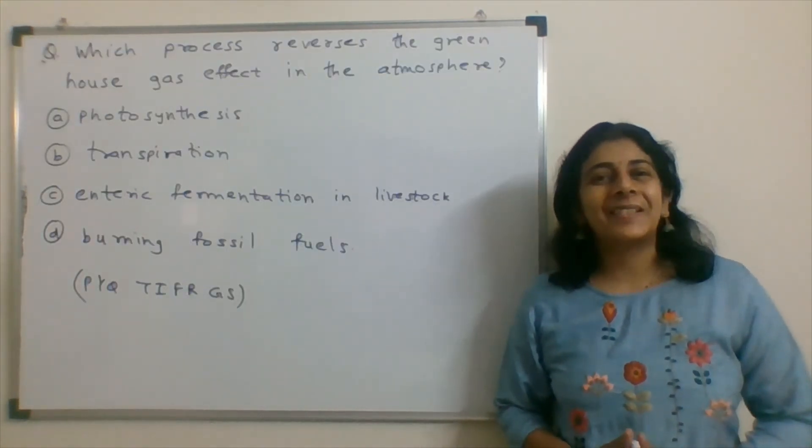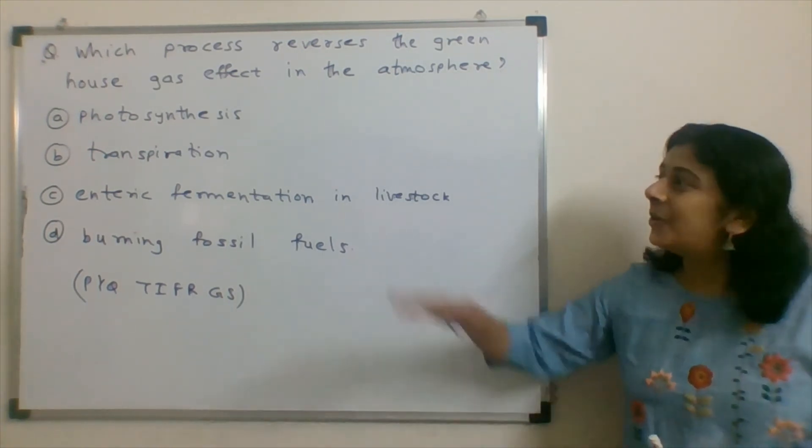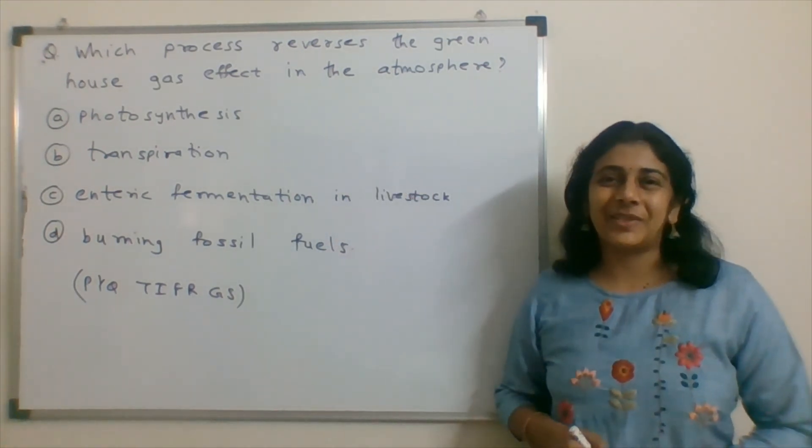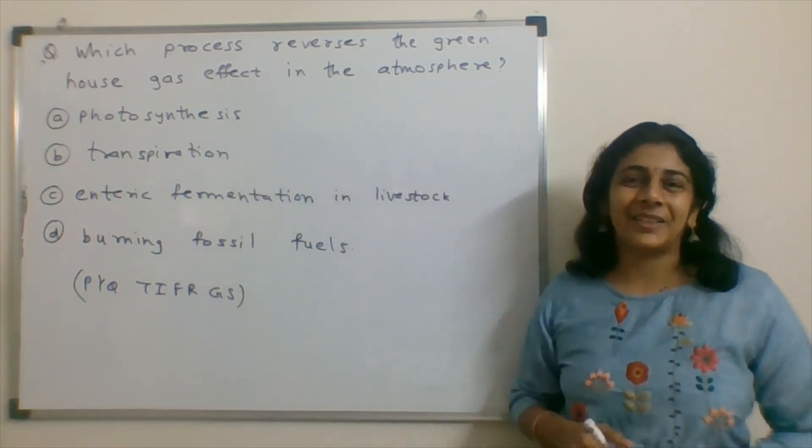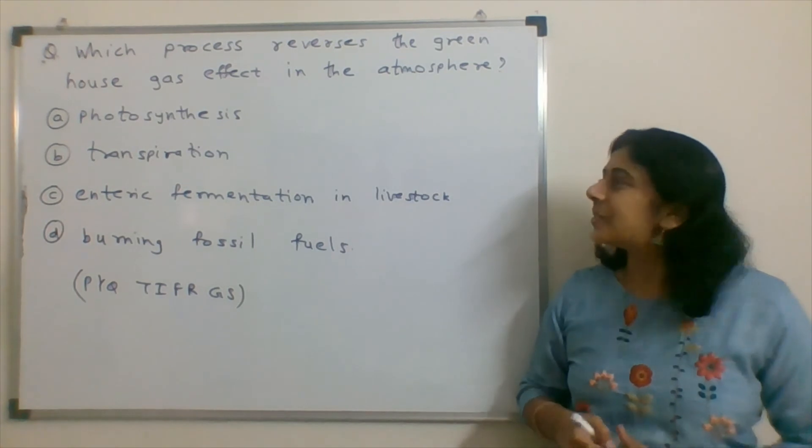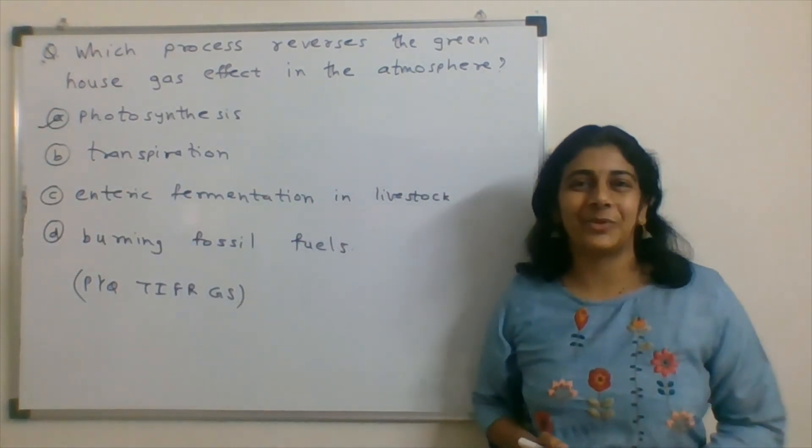After discussing all these things, we come to the conclusion that photosynthesis is the process which reverses greenhouse gas effect in the atmosphere. So, option A is the correct answer for this question.